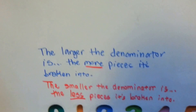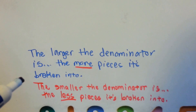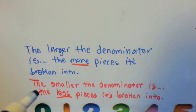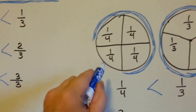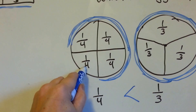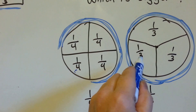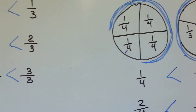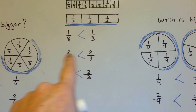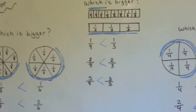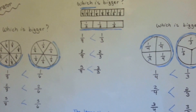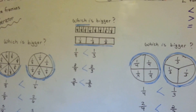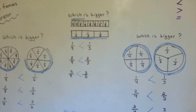Here's what you need to remember: the larger the denominator is, the more pieces it's broken into. The smaller the denominator is, the less pieces it's broken into. Just because the numerator — the top part — is the same, doesn't mean the fraction's the same. Because the denominator tells you how many pieces it's broken into, so it's smaller pieces. And that is how you compare fractions that have the same numerator. See you next video.